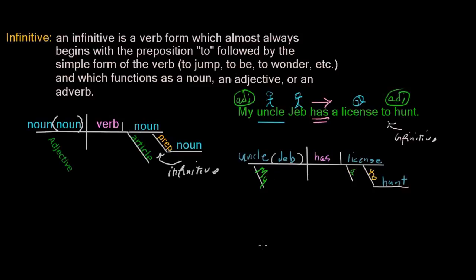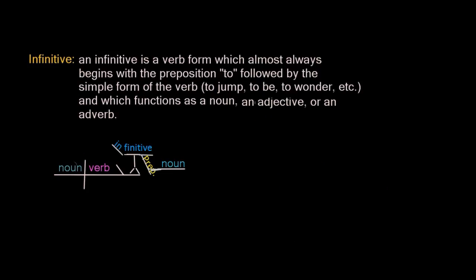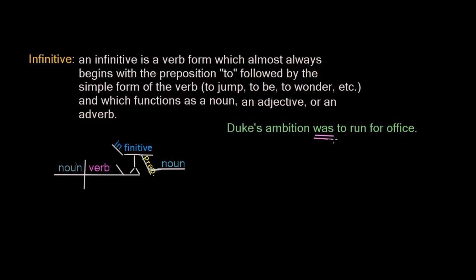Now let's look at an infinitive which is being used as a noun. Again, we're going to have one of these fun little platforms. But in this case, instead of a stair step, it looks more like what we would have for a prepositional phrase. Let's take the sentence: Duke's ambition was to run for office. See to run? That's going to be our infinitive. We have a linking verb — past tense of the verb to be — was. And we ask ourselves, what was? Ambition was. And our subject complement in this case is to run — an infinitive.